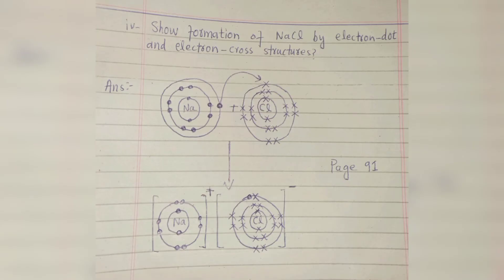Show the formation of NaCl by electron dot (cross) structure. The answer is also on page 91 and I have drawn it here. Sodium has one electron in its outer shell and chlorine has 7 electrons in its outer shell. Sodium gives its electron to chlorine, so sodium gets a positive charge and chlorine gets a negative charge. These two form an ionic bond and NaCl is formed.